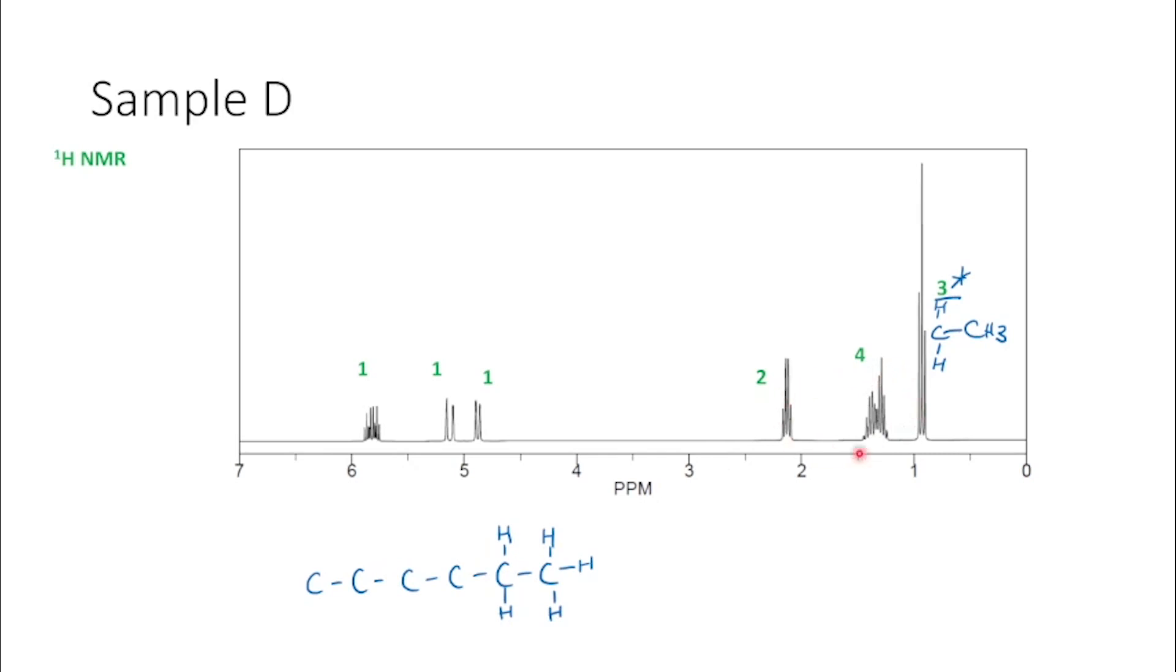Then I have a look at these signals here. This signal here is very complicated and integrates for four protons. So what that probably is, is two CH2 groups next to each other in the middle of our carbon chain. So I'd be considering these three groups as possibly contributing to that signal. Or two of these three groups.